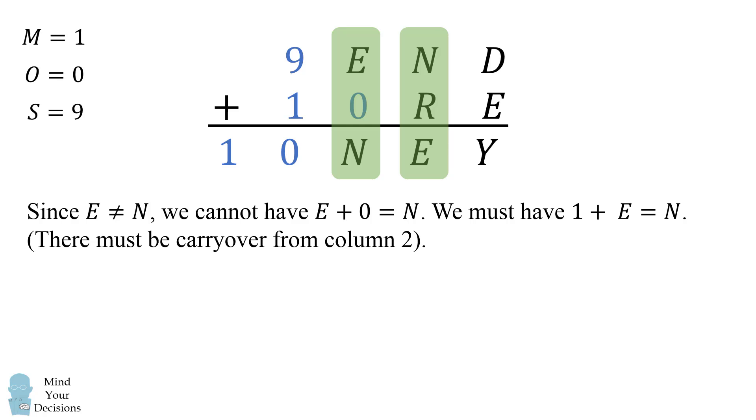Now we look at the second column. There must be carryover from this column into the third column. So we must have N plus R is equal to 10 plus E, or if there's carryover from the first column, we have 1 plus N plus R is equal to 10 plus E. So let's work through the first case.